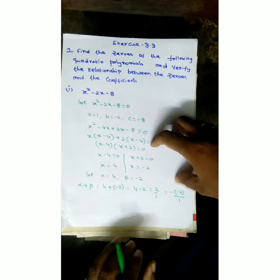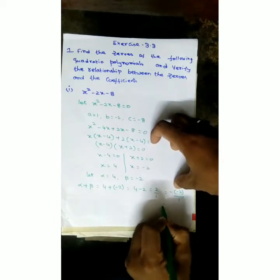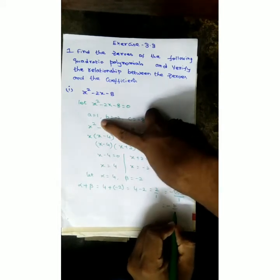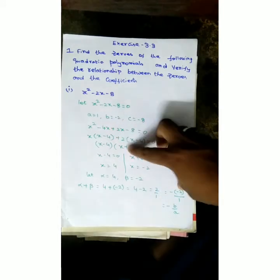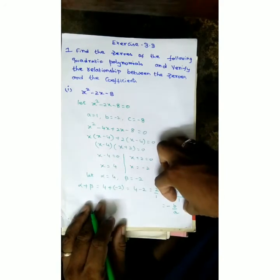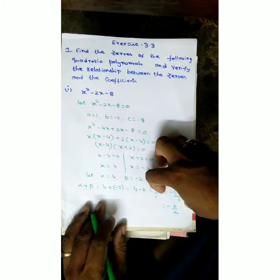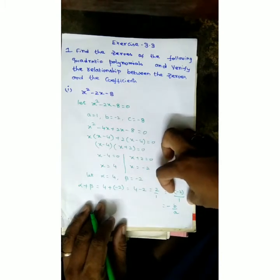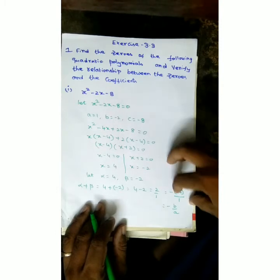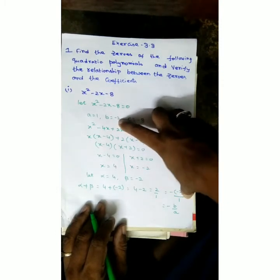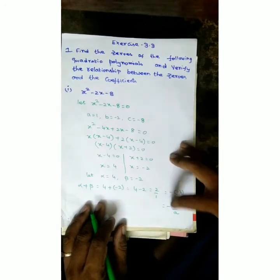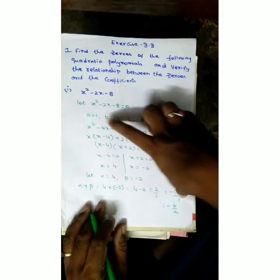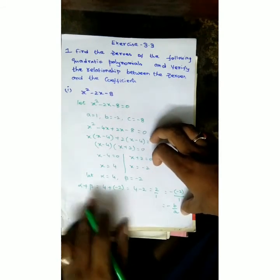Alpha plus beta equals minus b by a. 4 minus 2 is 2, which is 2 by 1. Minus into minus is plus, so minus b by a becomes plus 2. Sum of the zeros equals minus b by a - this condition is verified.